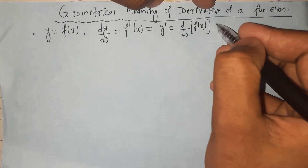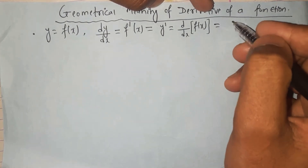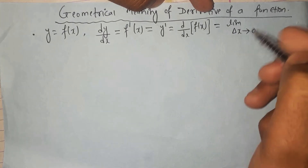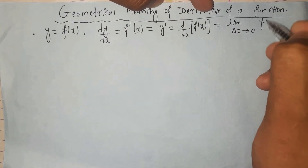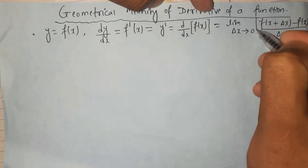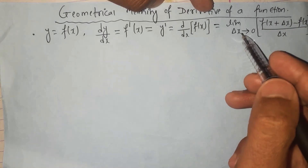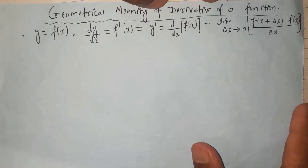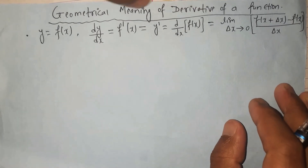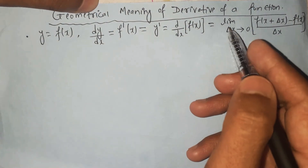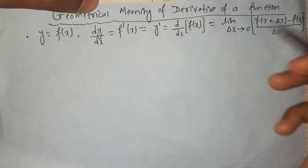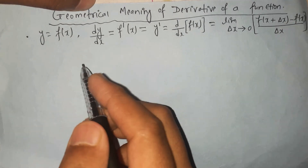The formula for calculating the derivative is the limit as delta x approaches zero of f(x + delta x) minus f(x), over delta x. We take the limiting value of this expression. These are the basic formulas for calculation of the derivative of a function.